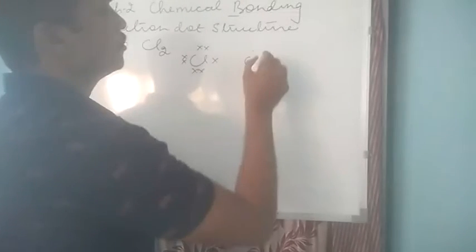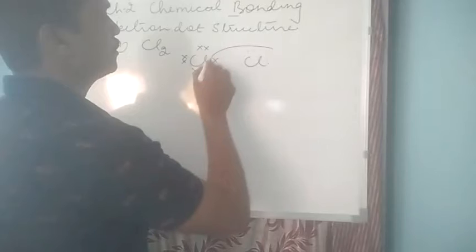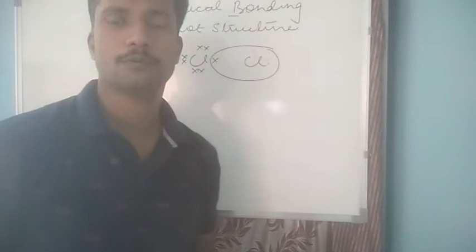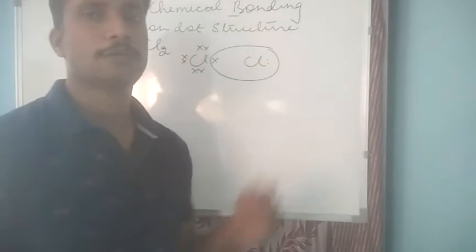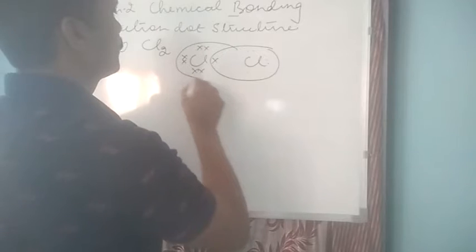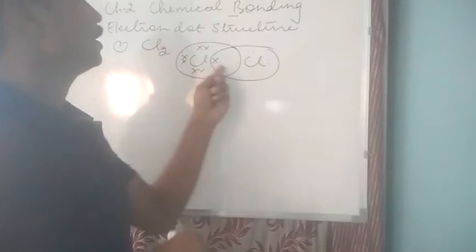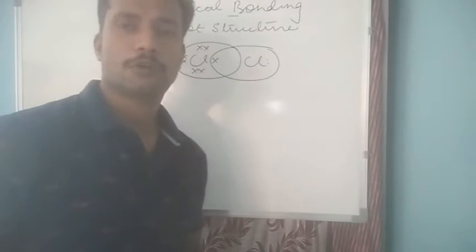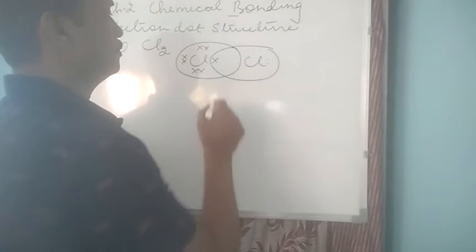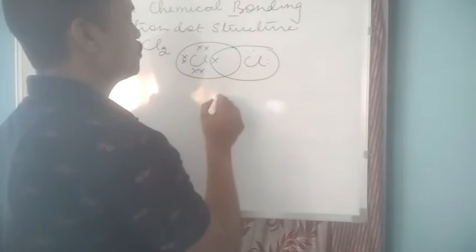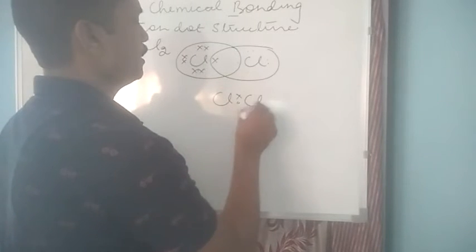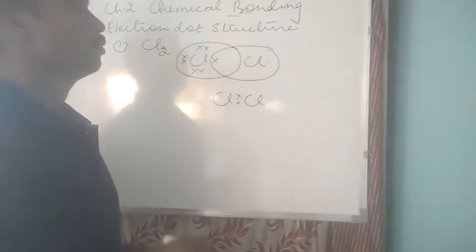Next we are going to show the sharing part. Because we know each chlorine atom requires 1 electron to become stable, so they are going to share their electrons. Now these 2 electrons being shared is called shared pair of electrons. Now what happens, these 2 shared pair of electrons will be coming closer and will lie exactly between the 2 chlorine atoms.